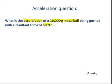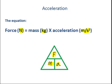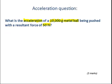And here we need to go back to our mass triangle. So what are we trying to work out? We're trying to work out acceleration. So acceleration equals force divided by mass. So a equals F over mass.